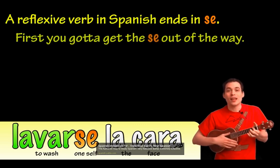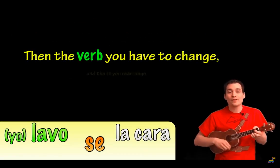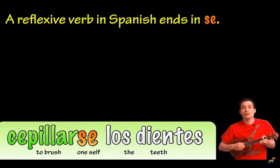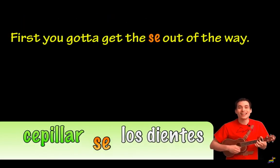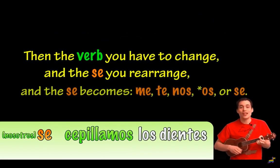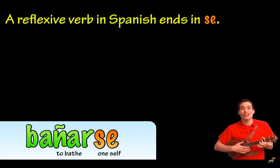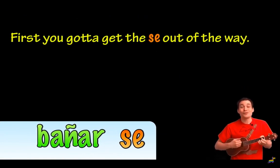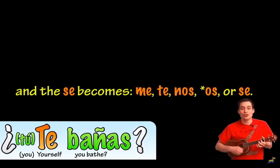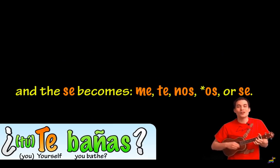A reflexive verb in Spanish ends in se. First you gotta get the se out of the way. Then the verb you have to change, and the se you rearrange — and the se becomes me, te, nos, os, or se. That's the song that will help you remember the conjugation process for reflexive verbs.